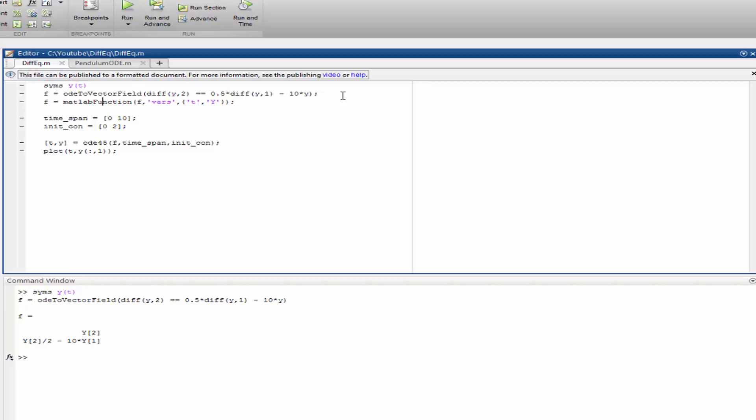And this line here is going to do exactly the same. Now we define a MATLAB function of F with these variables here. Take care not to swap them. Okay, now let's call ode45, let's see the final result.